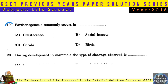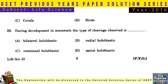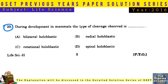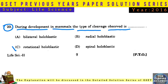Question No. 19: Parthenogenesis commonly occurs in social insects. Question No. 20: During development in mammals, the type of cleavage observed is rotational holoblastic.